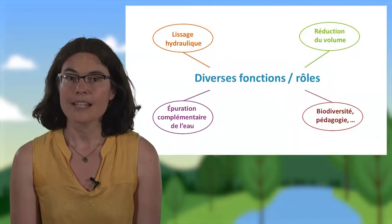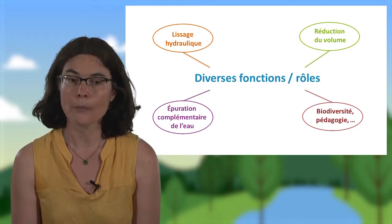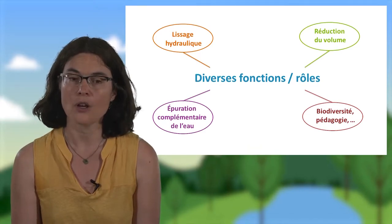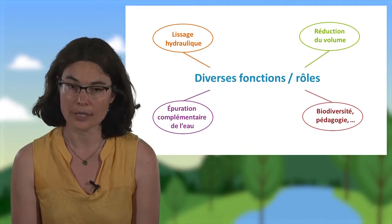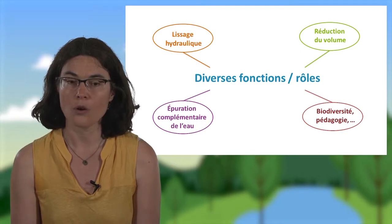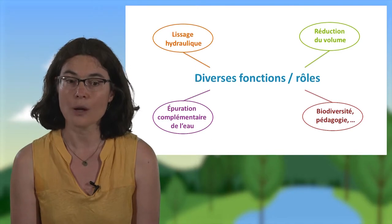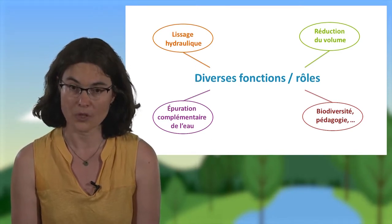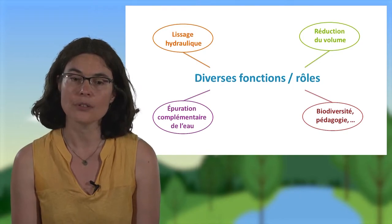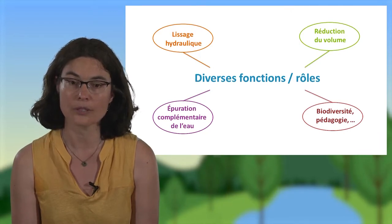Ces zones de rejet végétalisées vont assurer certaines fonctions particulièrement intéressantes pour limiter l'impact. Le premier rôle est le lissage hydraulique : du fait de leur capacité de tampon, elles vont permettre de lisser les pics de débit, ce qui est particulièrement intéressant par temps de pluie, lorsque la station reçoit et rejette d'importants volumes d'eau en très court terme. Ce lissage va permettre d'éviter des phénomènes d'érosion des berges ou de désoxygénation de l'eau.